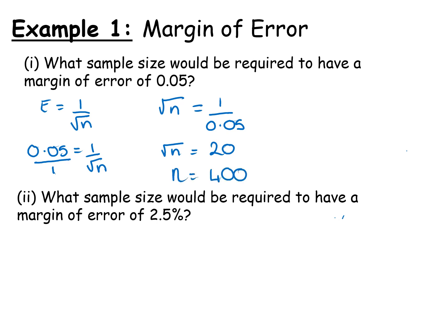So if we want to have a margin of error around 5%, we'd need to ask 400 people. So the second part of this question is what sample size would be required to have a margin of error of 2.5. So that is 0.025. We must always use decimals when we're working with this particular formula.